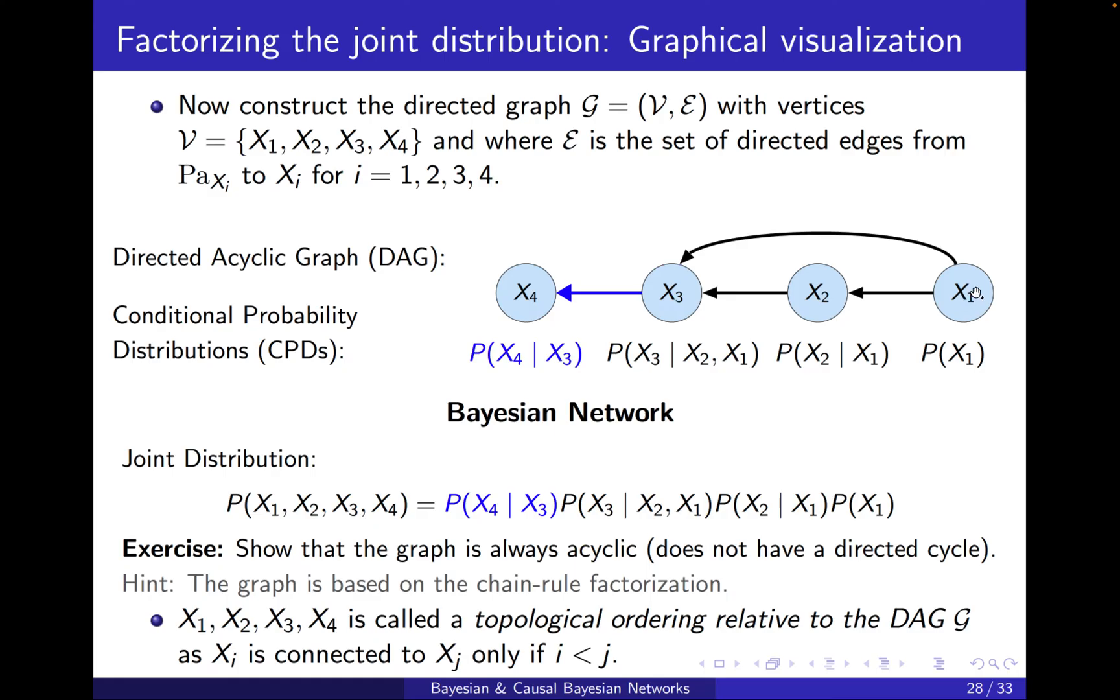like xi, we only have links from xi to the later ones, like xi plus 1 or xi plus 2 and so on. It's written in the general form that xi is connected to xj only if i is less than j. So x1 is only connected to x2, x3, x4, not the other way around. And x2 is only connected to x3 or x4, not the other way around and so on. This is called the topological ordering relative to the graph.